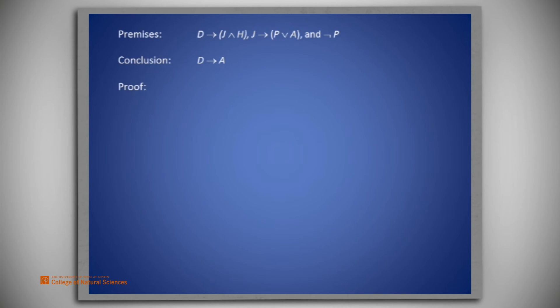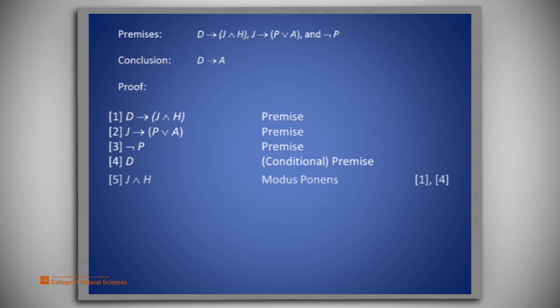The proof begins with listing the three original premises: D implies J and H, J implies P or A, and not P. Now we introduce the conditional premise D on line 4. From the statement on line 1, together with this new line 4, and using modus ponens, we obtain J and H on line 5.